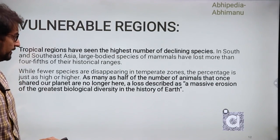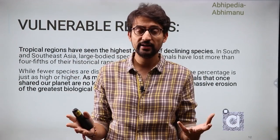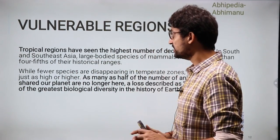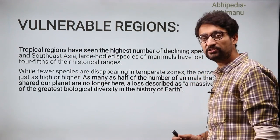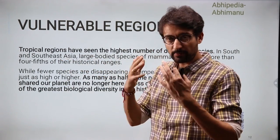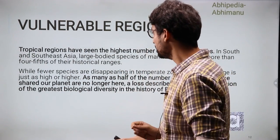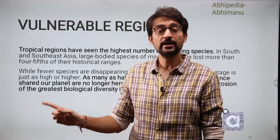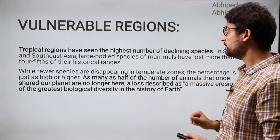This extinction is not focused in just a few areas — it is being seen across the entire world. However, some areas are registering extinction at a much higher scale. Tropical regions are registering the highest number of declining species. South East Asia and South Asia — including our own country — are seeing this the most. Temperate areas, although with lower numbers, are also showing the same speed of population decline. So this is a very widespread problem.